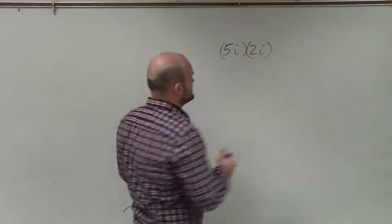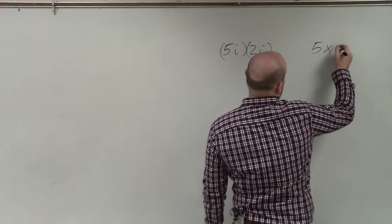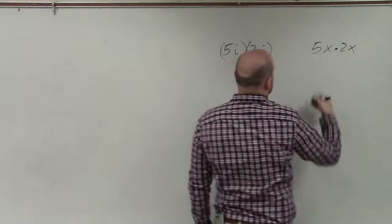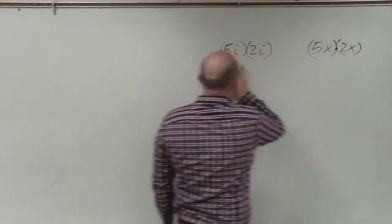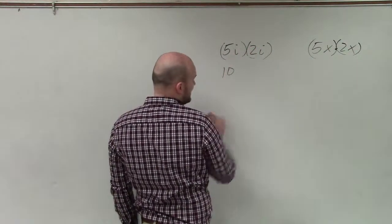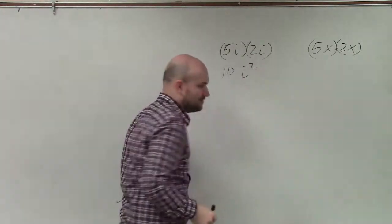When we're multiplying imaginary numbers, we're just going to treat them just like 5x times 2x. Same type of thing. So we're going to multiply our 5 times 2, which is going to give us 10. And then we're going to multiply our i's, which is going to leave us with i squared.